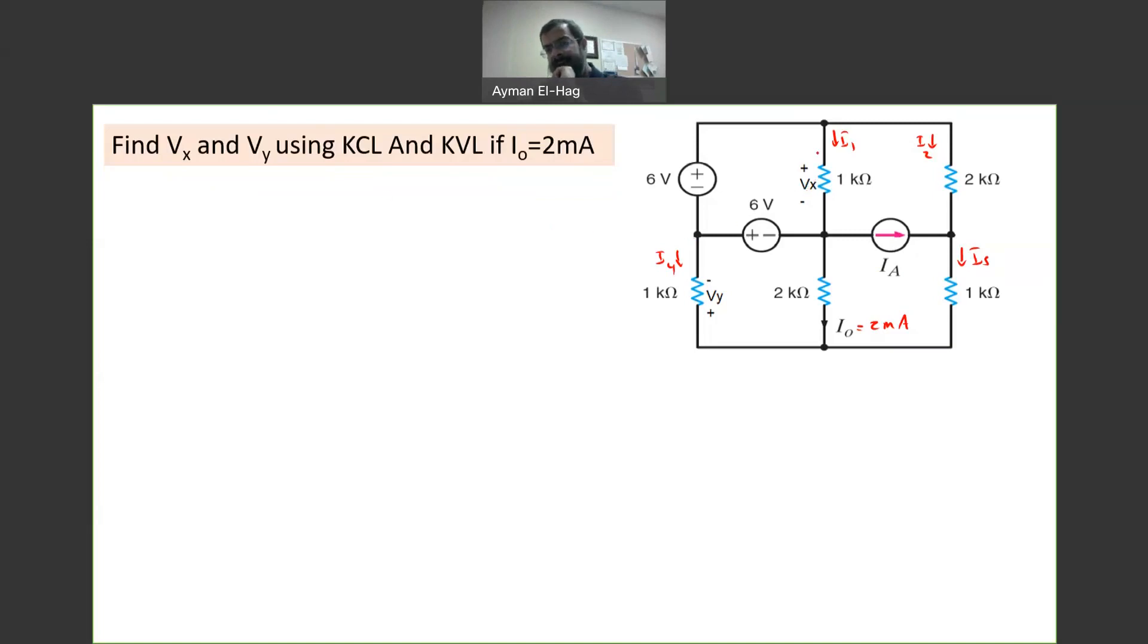And when I look here, I look to VX. VX is in this branch. Now, VX is part of this loop. And when I look to this loop, the values here are known in the other branches.